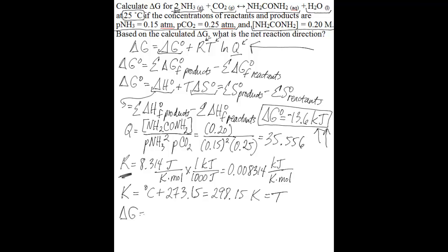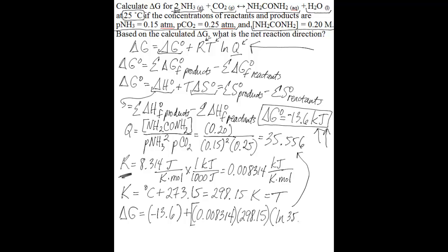Delta G equals negative 13.6 kilojoules (delta G naught), plus 0.008314 kilojoules per kelvin mole (R value), multiplied by 298.15 Kelvins (temperature), times the natural log of the reaction quotient Q, which is 35.556. Doing the math gives a delta G value of negative 4.7 kilojoules per mole.